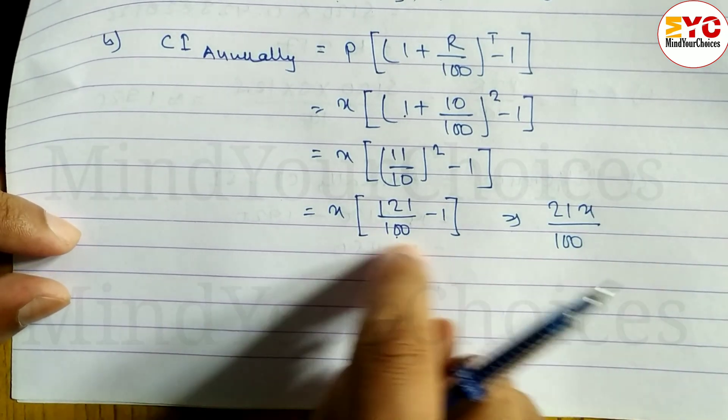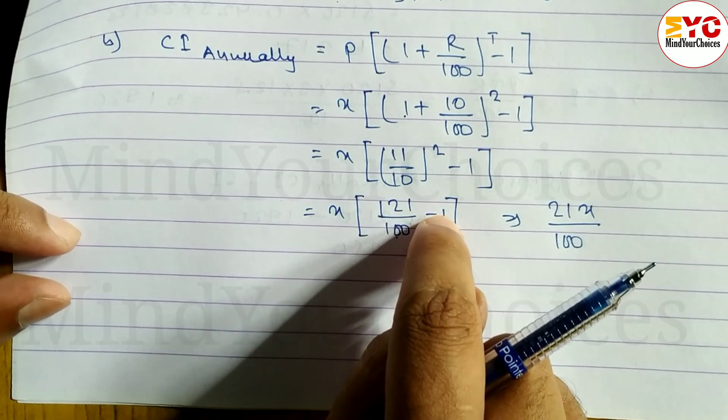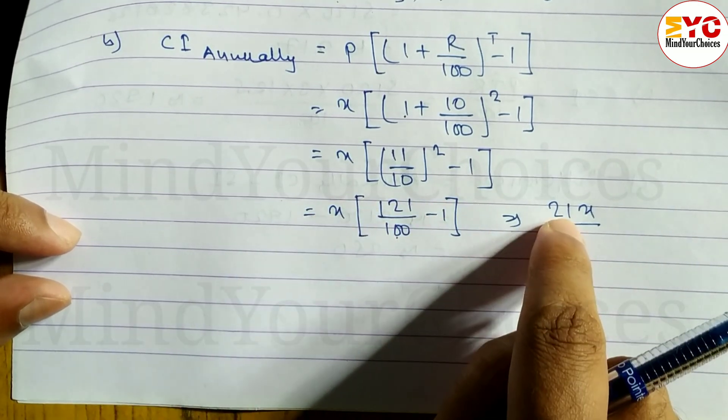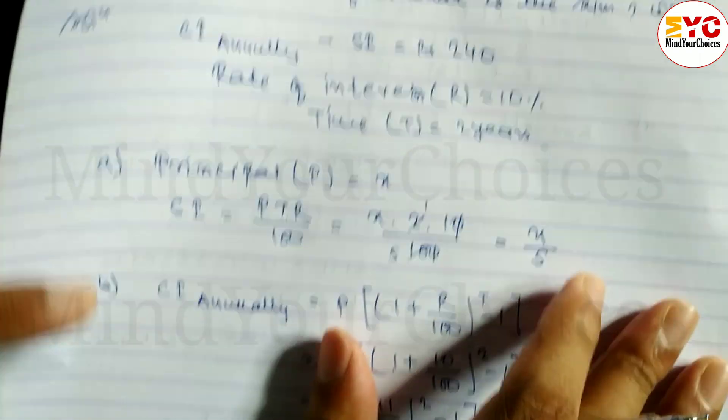21 into x is 21x divided by 100. You can write in decimal. Now I'll directly take LCM which is 100. 100 times 100, so 121 minus 100 is 21, giving 21x by 100.